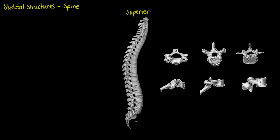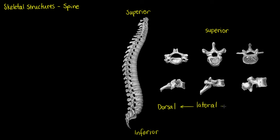We have our spine here with the superior end and the inferior end — superior being the top, inferior the base. We also have a superior view looking from above, and a lateral view looking from the side. This superior and lateral view are going to be of individual vertebrae. We'll also have the dorsal end of that bone — dorsal being the back or posterior, and ventral being the front or anterior. So just different names for posterior and anterior.